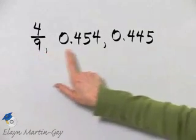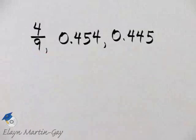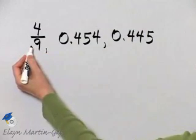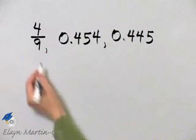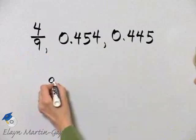Let's write these numbers in order from smallest to largest. In order to do so, let's first find the decimal equivalent of 4 ninths by dividing 9 into 4.